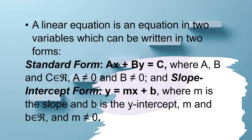A linear equation is an equation in two variables which can be written in two forms. The standard form is ax plus by equals c, where a, b, and c are real numbers, a is not equal to 0, and b is not equal to 0. The slope-intercept form is y equals mx plus b, where m is the slope and b is the y-intercept, m and b are real numbers, and m must not equal 0.